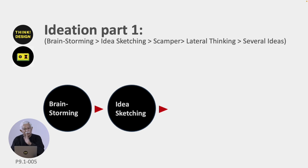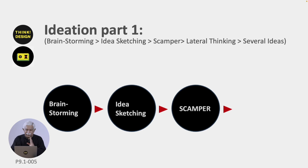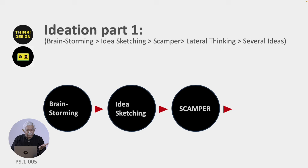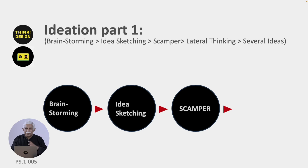Once you do idea sketching, you go on to a technique called SCAMPER, where you actually modify your idea sketches. SCAMPER is an acronym of 7 letters; each one stands for a technique: S is Substitute, C is Combine with another idea, A is Adopt another idea, M is Modify your idea, P is Put it to another use, E is Eliminate parts which are not essential, and R is Reverse or invert the idea. These are 7 techniques by which you can refine the ideas you already sketched.